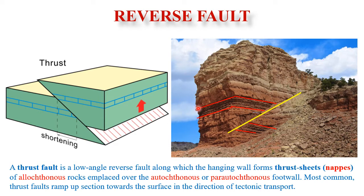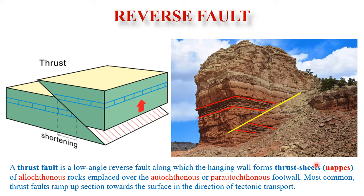We can observe reverse faults in both profile and 3D views, where the hanging wall block has moved up relative to the foot wall, as shown by displaced marker horizons. A thrust is a low-angle reverse fault along which the hanging wall forms thrust sheets or nappes of allochthonous rocks emplaced over autochthonous or parautochthonous foot wall. The most common thrust faults ramp up section towards the surface in the direction of tectonic transport.